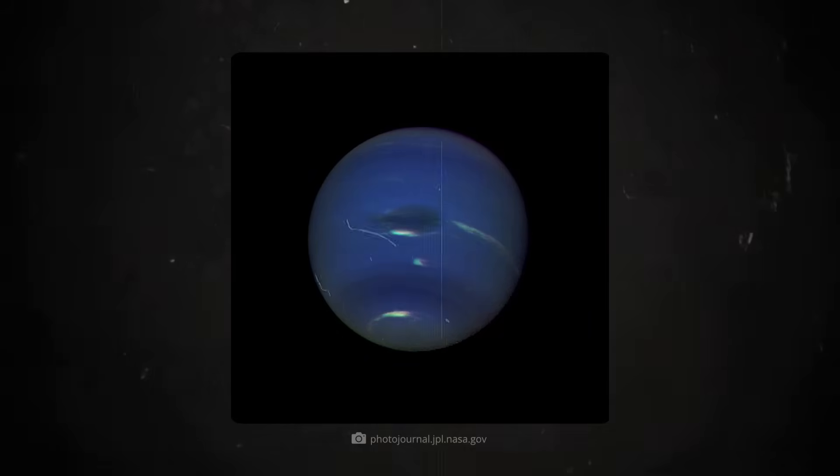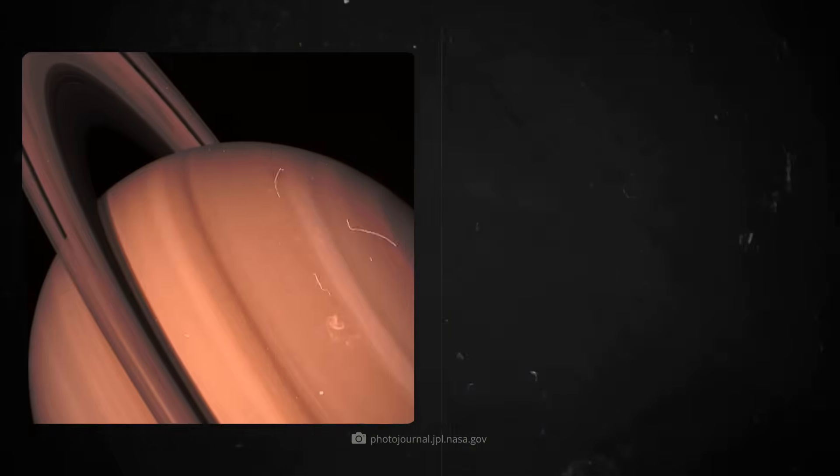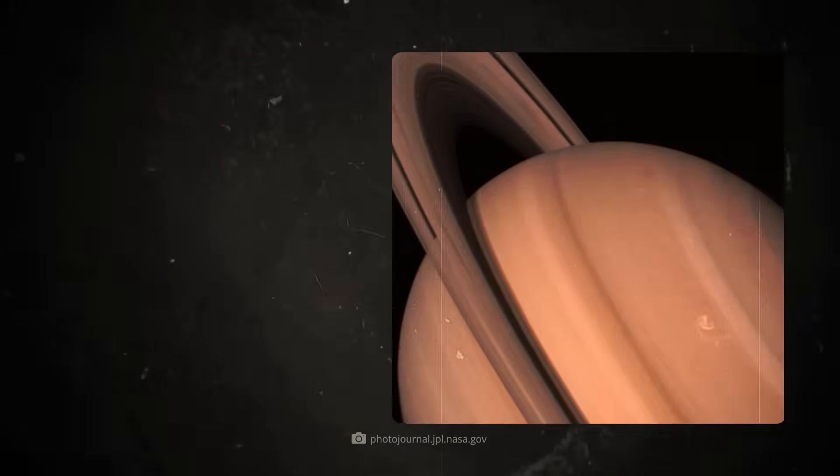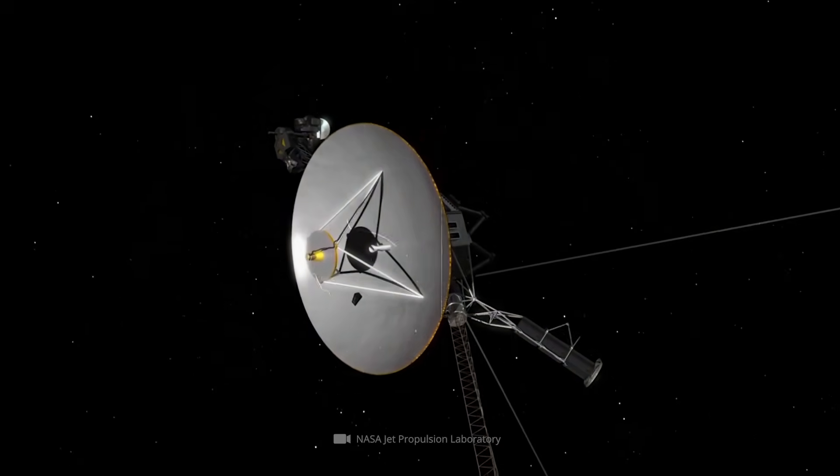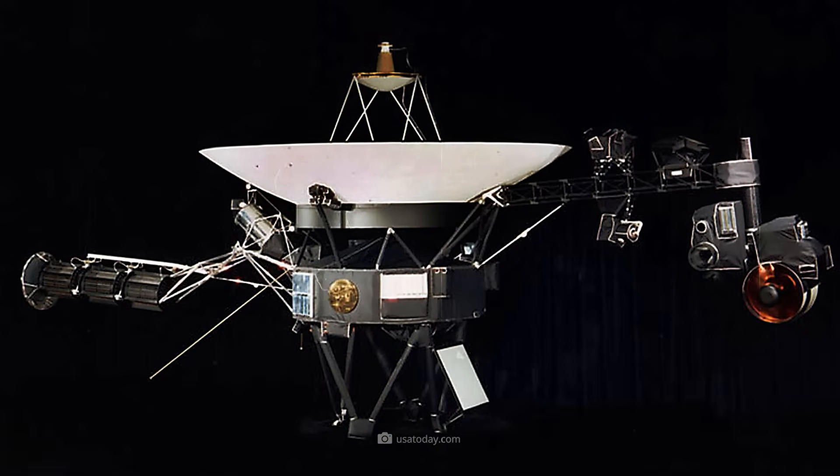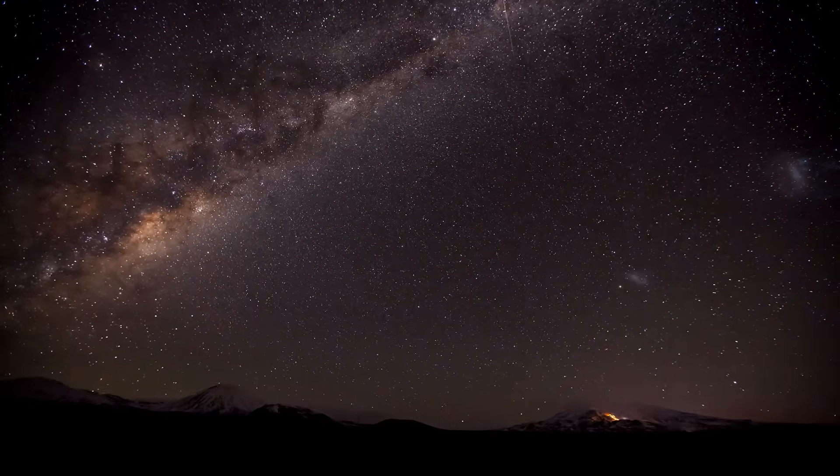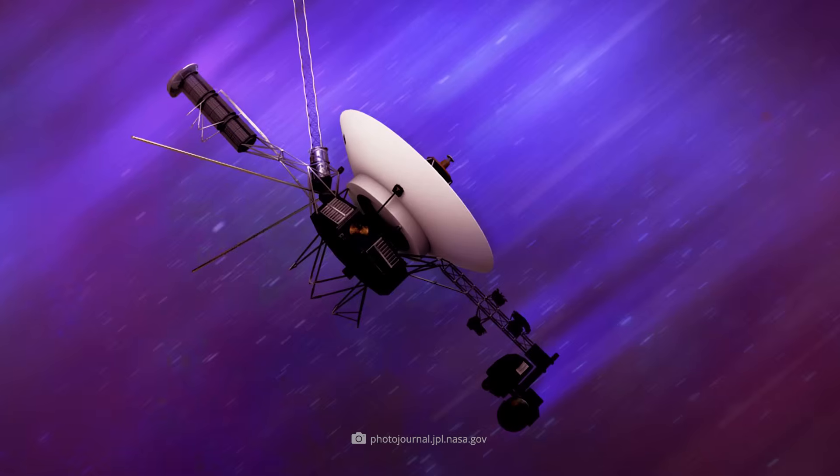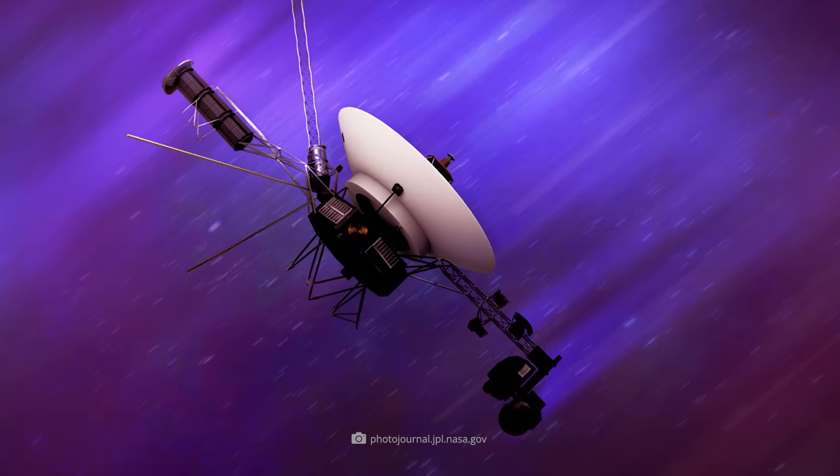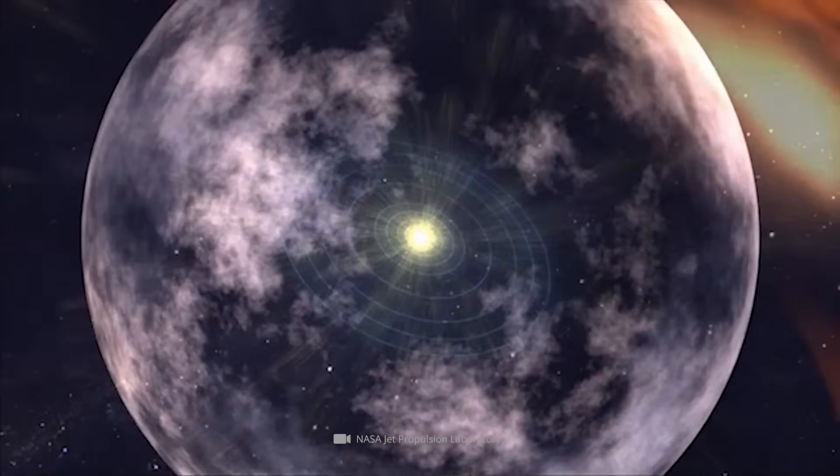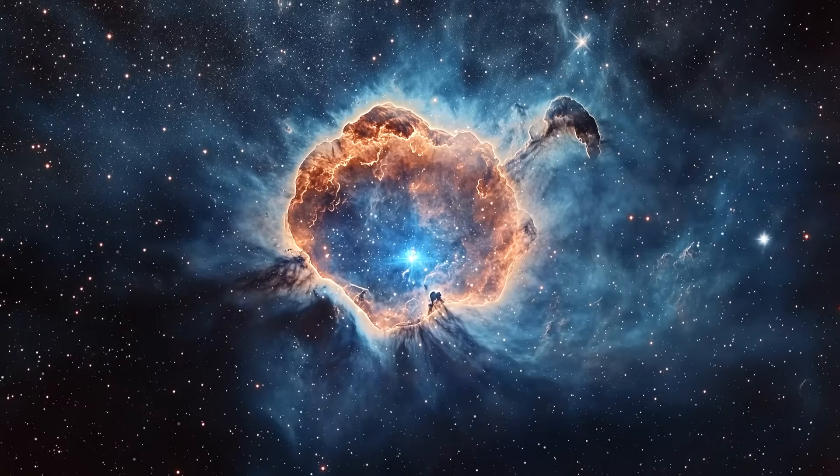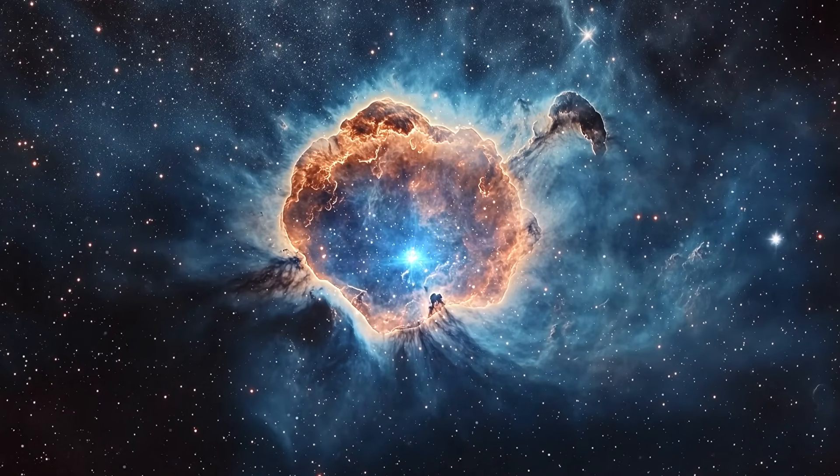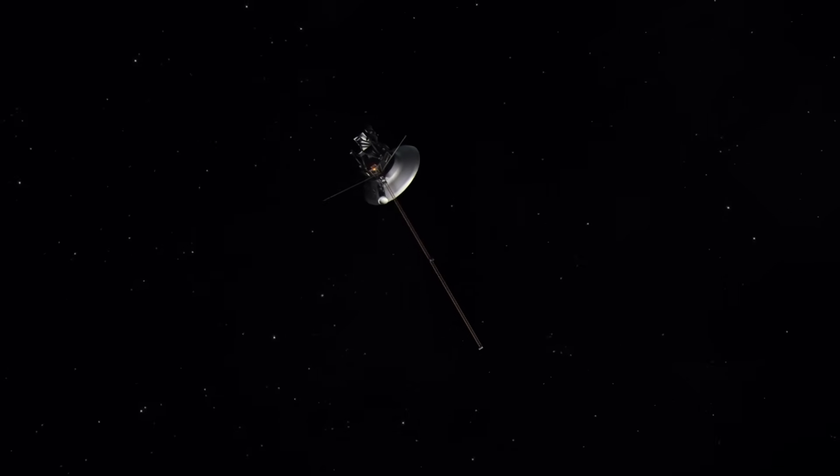In fact, Voyager 2 is still the space probe that has seen more planets up close than any other man-made object. But what has this cosmic old-timer discovered on its journey, which is now almost 50 years long? What scientific breakthroughs do we owe to the Voyager mission and what does a probe see when it passes the boundaries of our home system? Stay tuned until the end and see for yourself what exciting secrets of the cosmos the most famous probe duo in history has revealed.